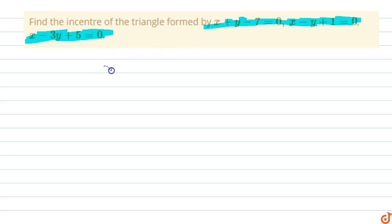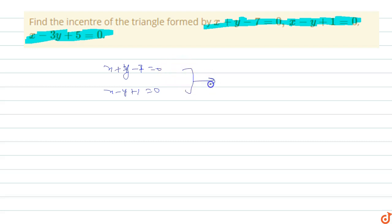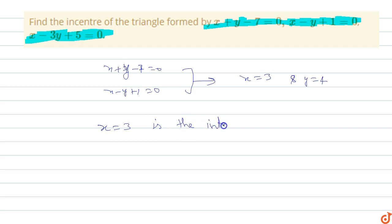Take x + y - 7 = 0 and x - y + 1 = 0 — two lines. The two bisectors of these lines are x = 3 and y = 4. Here x = 3 is the internal bisector of these two lines.